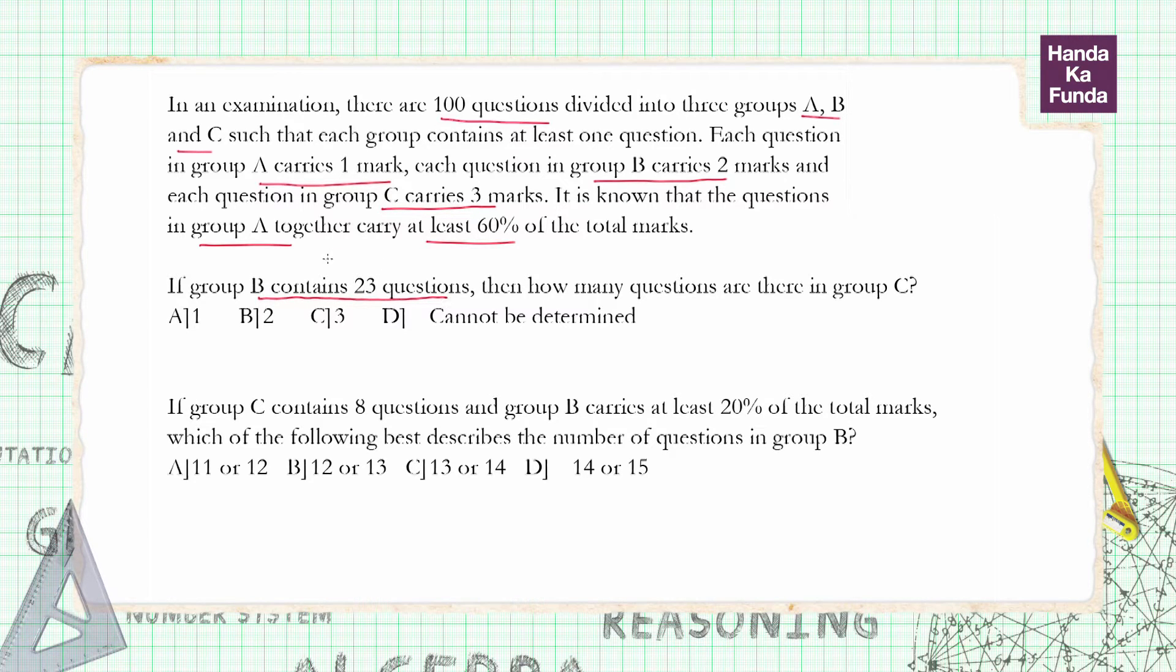Now in the first question, we are given B contains 23 questions, which means a total of 46 marks. Then how many questions are there in group C? Now group C will have at least one question because each group has at least one question, so that means the minimum number of marks that group C has is three. Now how many questions are left? 23 are gone in group B, one is gone in group C, so I have a max to max a total of 76 questions left for group A.